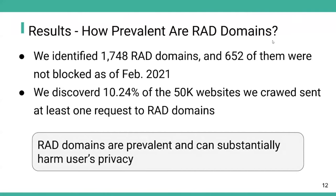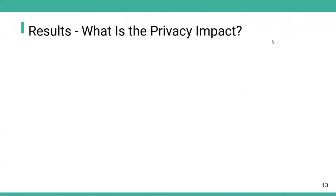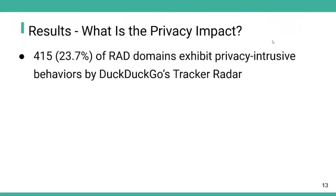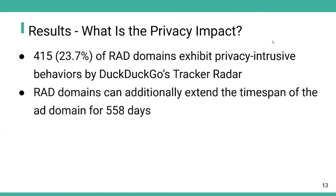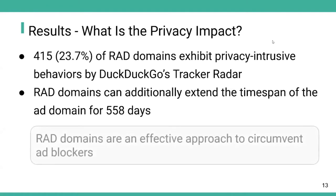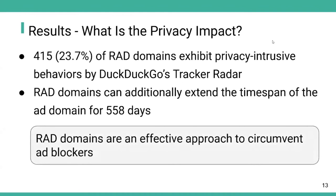Next, we measure the privacy impact of red domains. 415, which is 23.7% of the red domains, exhibit privacy-intrusive behaviors according to DuckDuckGo's tracker radar. This includes fingerprinting, tracking, and session replaying. Additionally, red domains can extend the time span of the original ad domain by 558 days on average. Both results indicate that red domains are a very effective approach to circumvent ad blockers.